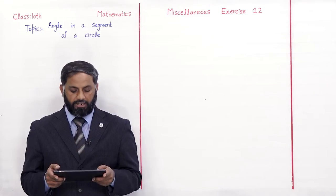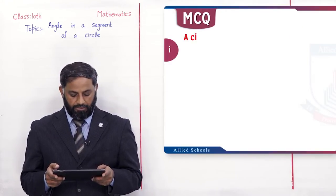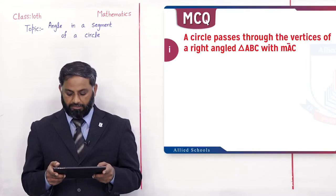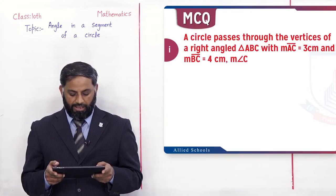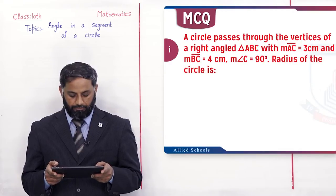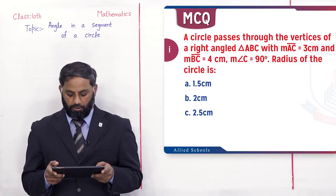Students Miscellaneous Exercise 12 solve karte hain. Multiple choice questions hain, four possible answers are given for the following questions. First MCQ: A circle passes through the vertices of a right-angled triangle ABC with measurement AC = 3 cm, measurement BC = 4 cm, measurement of angle C = 90 degrees. Radius of the circle is: option A 1.5 cm, option B 2 cm, option C 2.5 cm, option D 3.5 cm.